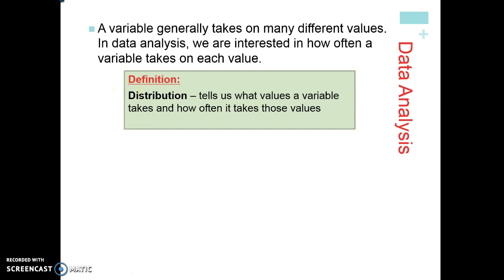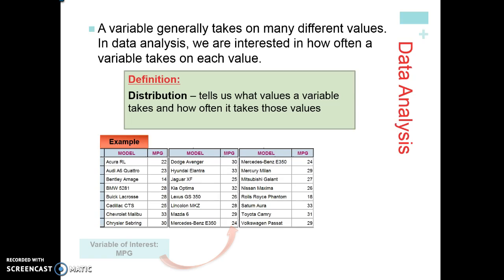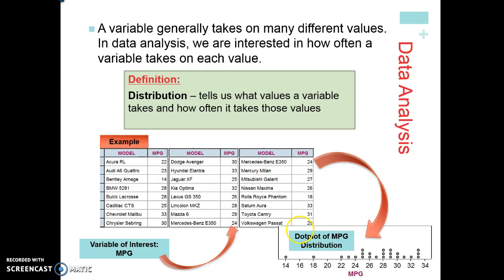If you just have a bunch of numbers in front of you, that's probably not going to tell you anything useful. For example, if we're looking at cars and the average miles per gallon for each, the variable of interest is miles per gallon. When you just look at a list of numbers it's not easy to see what is the lowest or highest value or where the average falls, but if you display that data in a graph, it's very easy for someone to see that there's a car that only gets 14 miles per gallon, one that gets 33, and most are somewhere between 25 and 30.